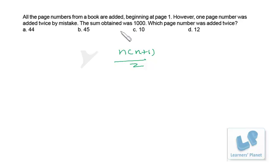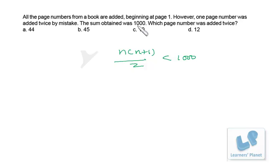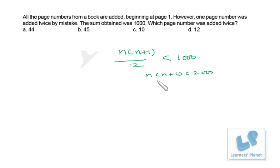This sum should be less than 1000. We don't know what that number is, but this sum should be less than 1000. That means n(n+1) should be less than 2000. Now we have to find out the value of n.